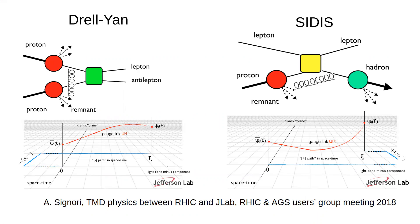Soon after, Collins amended his asymmetry approach by the addition of Wilson lines. We see a non-zero single spin asymmetry and a sign difference that is process-dependent. Note here, the gluon exchange between remnant and either incoming or outgoing quark affects the direction of the staple links. Drell-Yan and SIDIS therefore bring opposite signs.